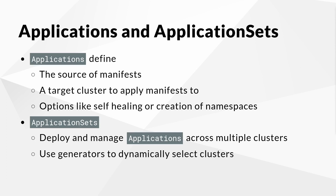It is possible to deploy multiple application sets contained in one mono repo. By using generators, it is possible to dynamically select a subset of clusters available to Argo CD to deploy resources to. In this demo, we are going to use application sets to deploy OpenShift Virtualization and virtual machines to multiple clusters while using the same declaration of resources for all clusters.